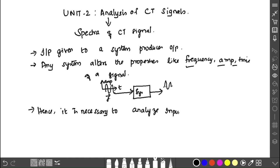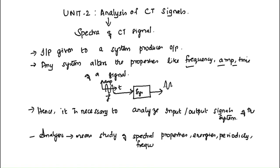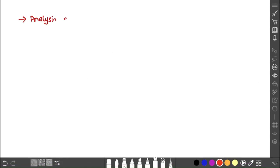Here we need to analyze what kind of signal and input is given and what kind of output is produced. Analysis is the study of spectral properties of a signal in terms of frequency—particularly in terms of frequency.